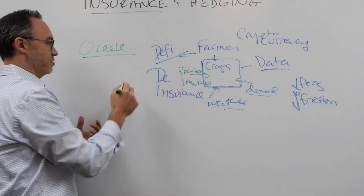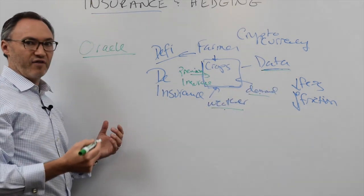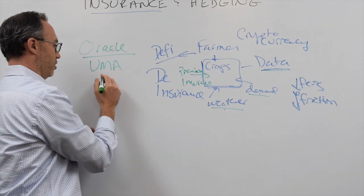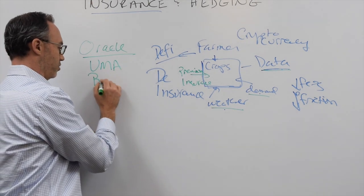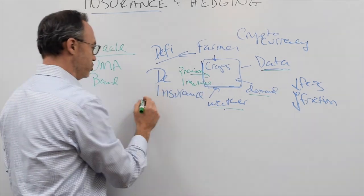So now what we have is, because of the rise of all this data, we have the ability to tie Oracles to this. So some companies working on Oracles are, there's a company called UMA, there's a company called Band Protocol. Because what's happening is, you're going to have to take this insurance product and wrap it into a smart contract.